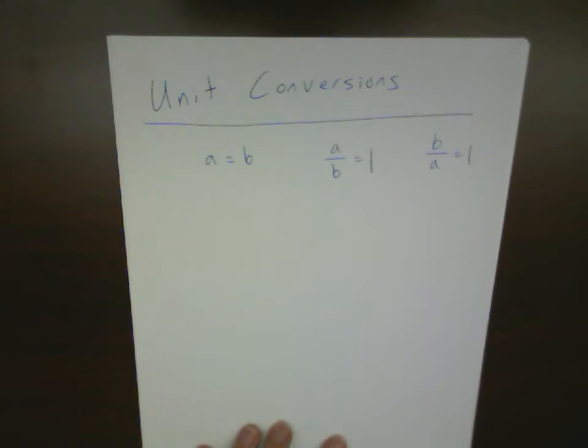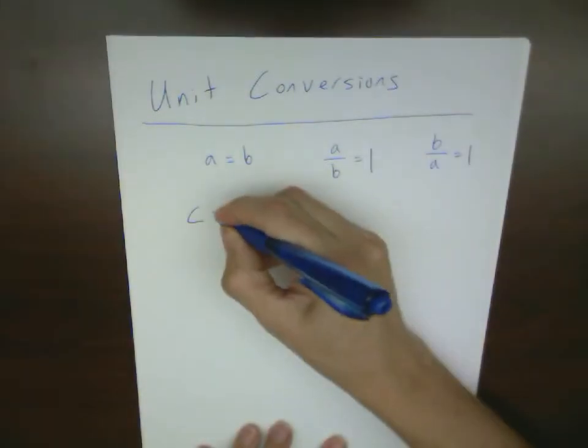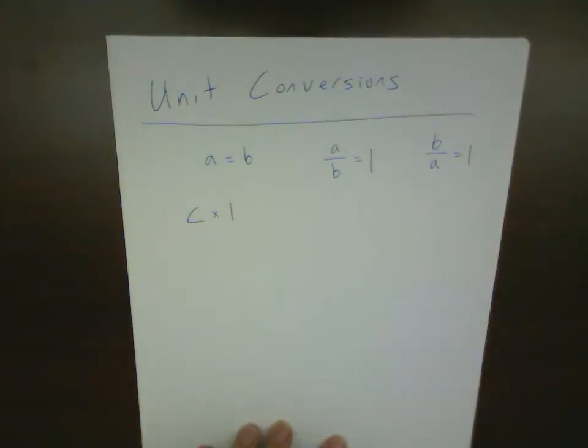Now the second rule of algebra that we want to keep in mind is that if I take any quantity C, anything at all, and I multiply it by a factor of 1, I haven't really changed the quantity. I still have the same basic quantity C.